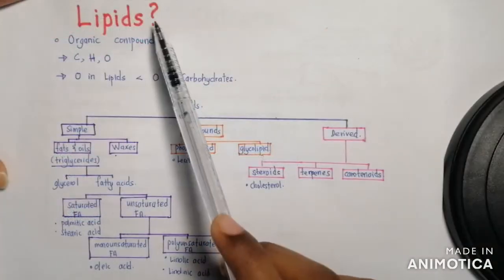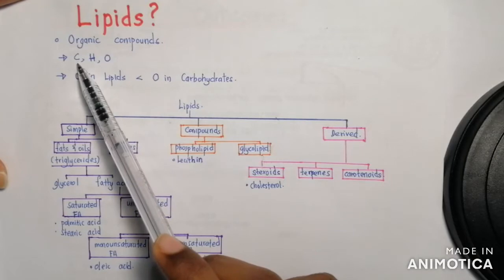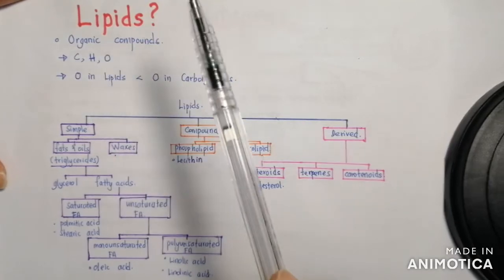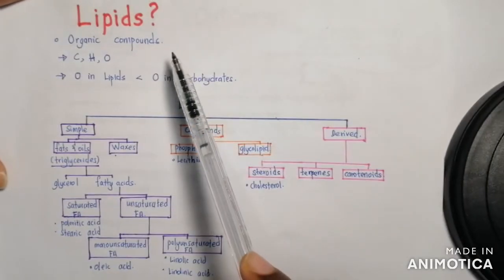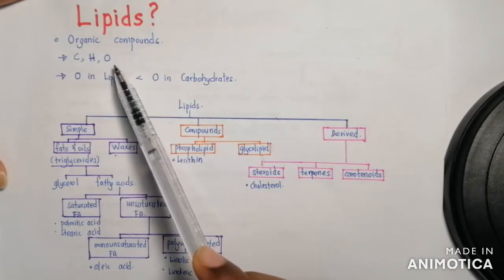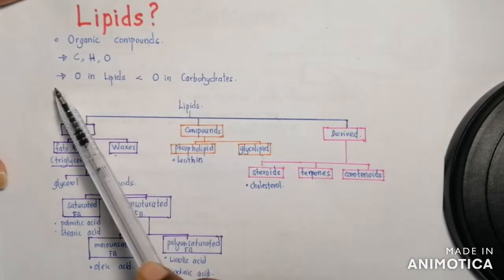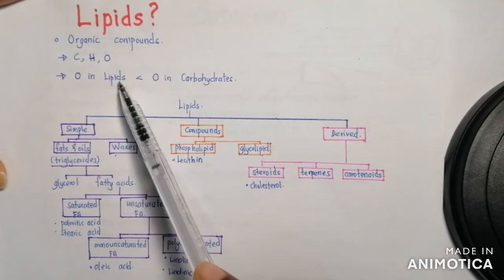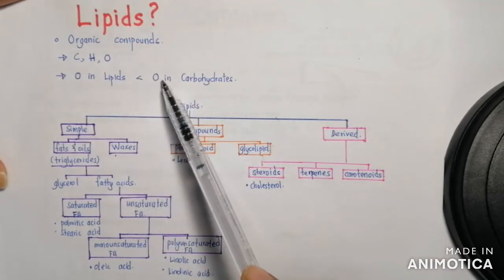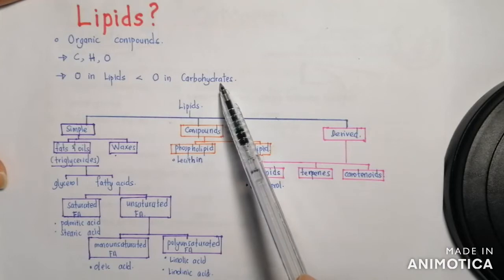So what are lipids? Lipids are organic compounds composed of carbon, hydrogen, and oxygen — the same elements found in carbohydrates. But what is different is the proportion of oxygen in lipids is lesser compared to the proportion of oxygen atoms in carbohydrates.